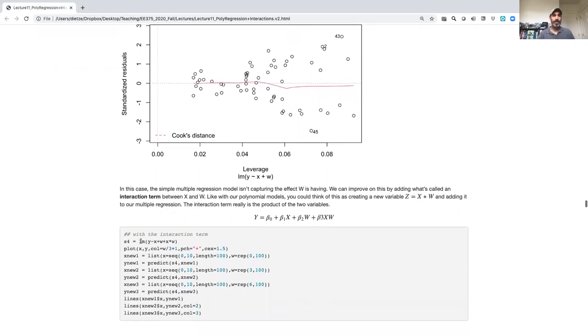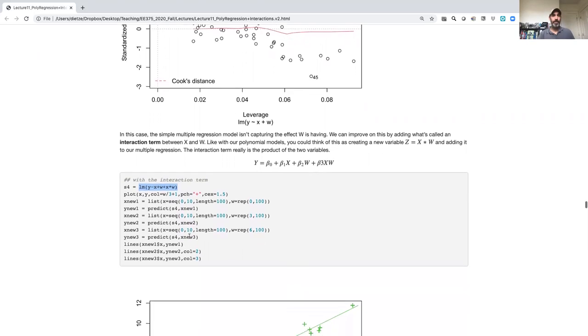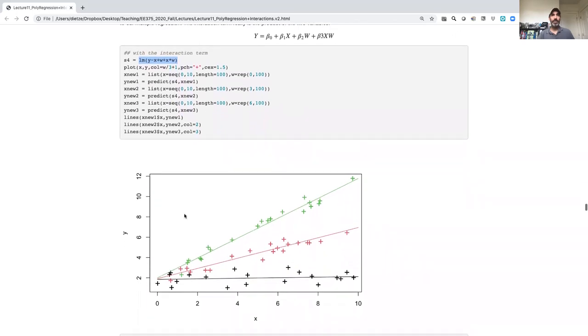So let's see what that does, and then we'll talk about why that does what it does. So here I'm now fitting a linear model, and that linear model I have my x plus my w plus x times w. So I'm literally just multiplying the two together. Now when I make predictions for each of these values of the relationship between x and y, where I'm varying each of these, I'm color coding the data by the value of w, and then making a plot that accounts for that as well.